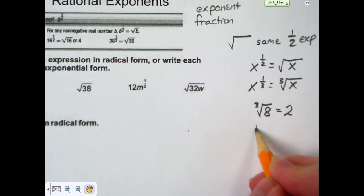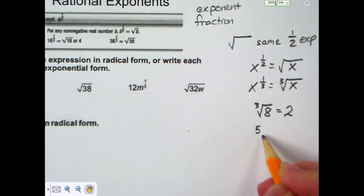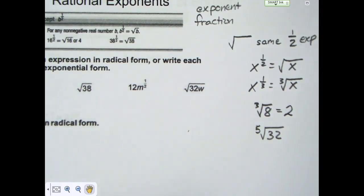You also would have something like the fifth root of 32. The fifth root of 32 means you're thinking what number can I multiply by itself five times and get 32. To multiply something by itself five times, it's got to be a small number.